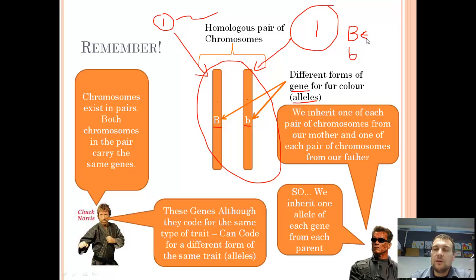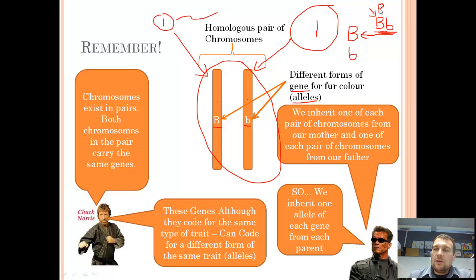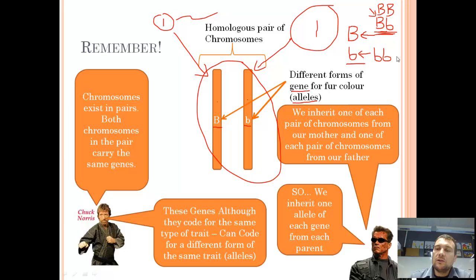A dominant allele is always shown if it is present. So on a homologous pair of chromosomes, if we've got a big B on one chromosome and a little b on the other, because we've got a big B it means we're going to be expressing whatever that codes for — let's say that codes for black fur, so that individual will have black fur. Another combination that would produce black fur would be someone with two big Bs. The recessive allele is only expressed if it's paired with another recessive allele; otherwise you'll only see the dominant trait. So the only time you get an individual with white fur is if they've got two recessive alleles — otherwise it's masked by the dominant one.